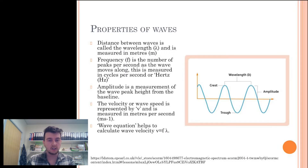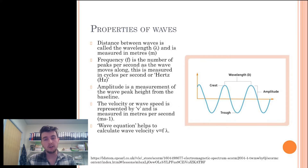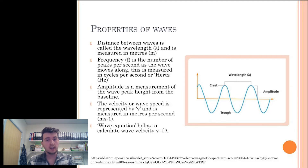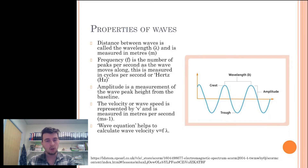The following image is that of a transverse wave. This wave shows various features such as the distance between peaks, which is called the wavelength, and is represented by the Greek letter lambda, and is measured in meters. The frequency, or f, is not marked on this diagram, but it represents the number of peaks per second as the wave moves along.